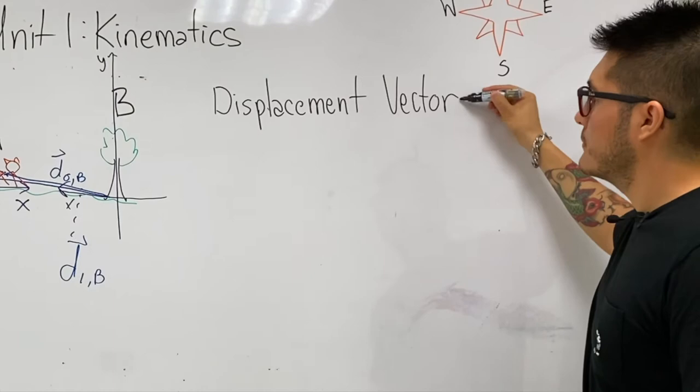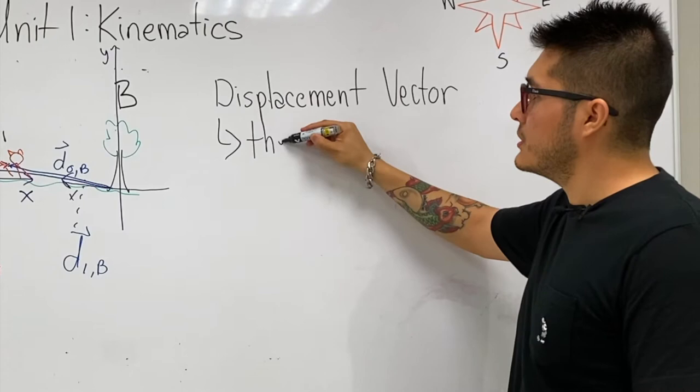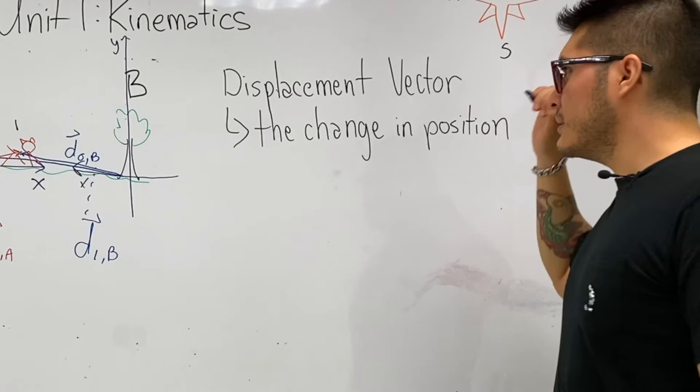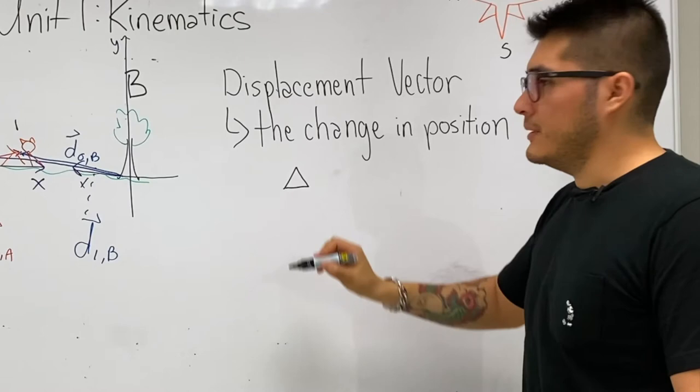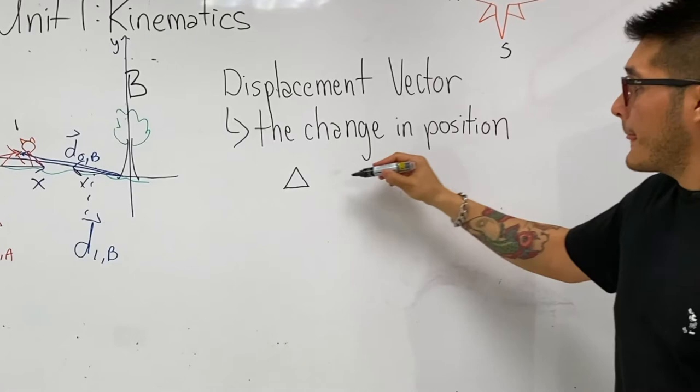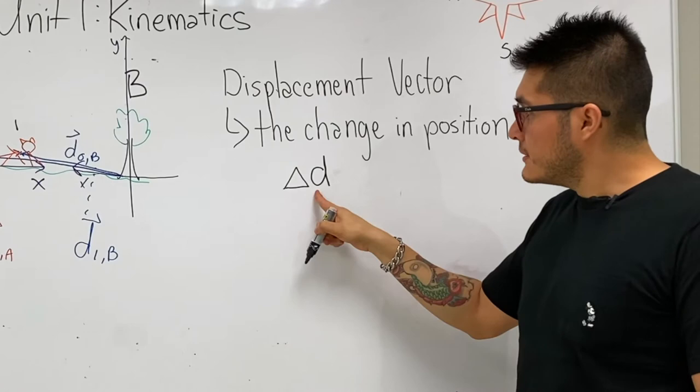The definition that we're going to use for displacement vector is the change in position. If we're looking at the change in position, this should remind you of a mathematical symbol commonly used as delta. How do we define the variable for position? We use the letter d. So we can call this Δd̂.